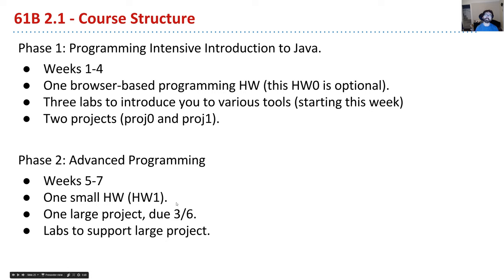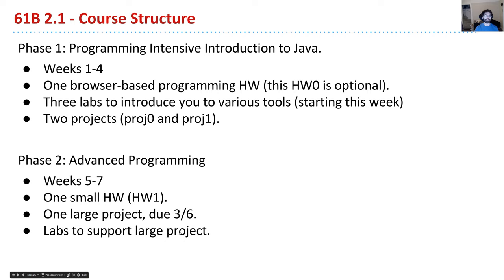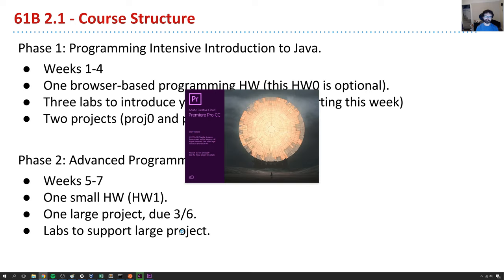Phase two is the advanced programming part of the class — this is where you'll get a chance to design something. You'll work in a team to come up with a design to solve a problem. Unlike programming classes where you just fill in a function, here you have to design the architecture, which will be really challenging — especially for average to below-average programmers. But I'm doing it because I want to build you into independent programmers. That big project will be due March 6, with some labs for peer design reviews.